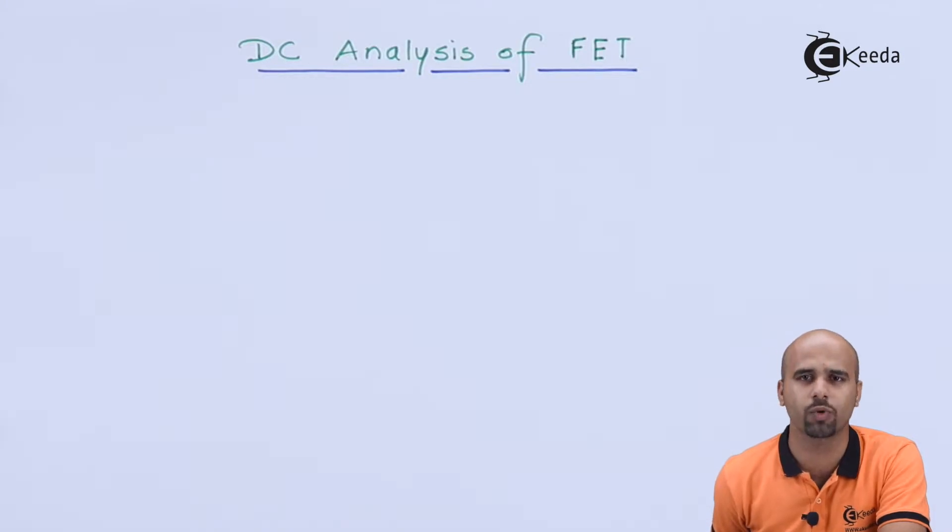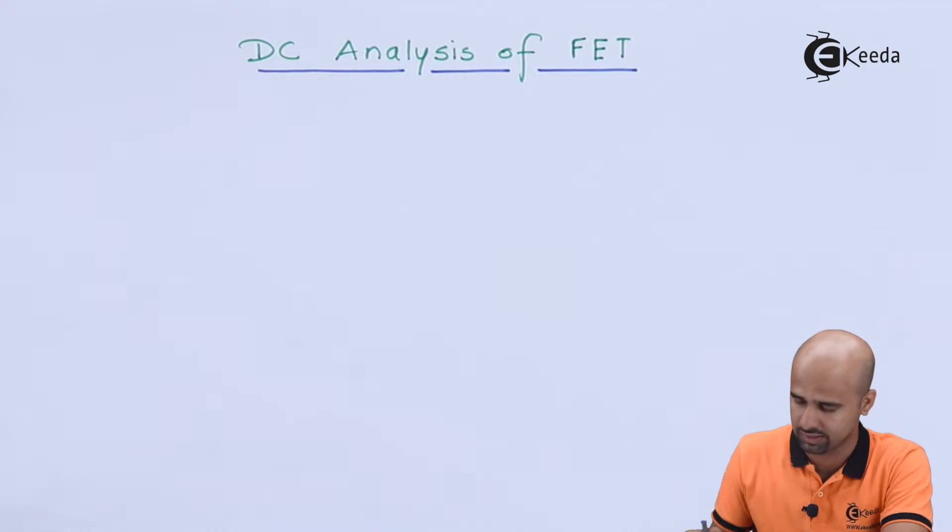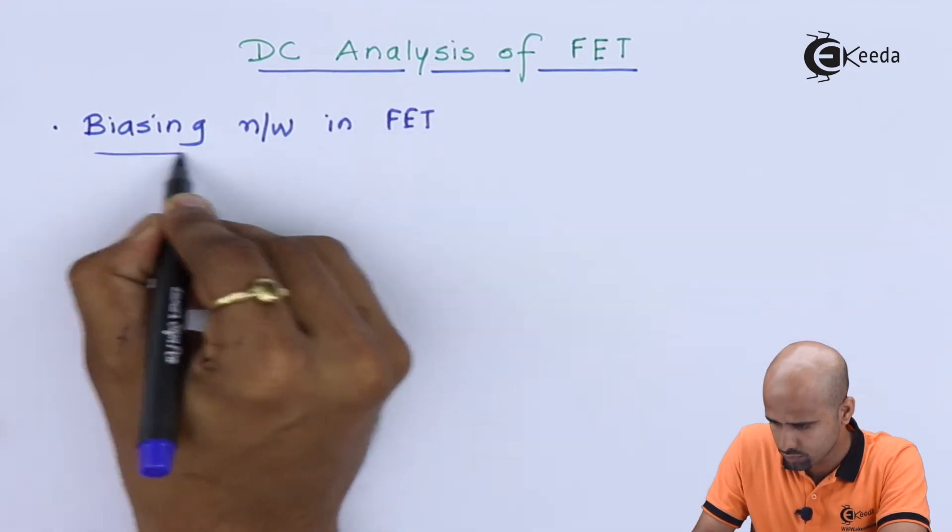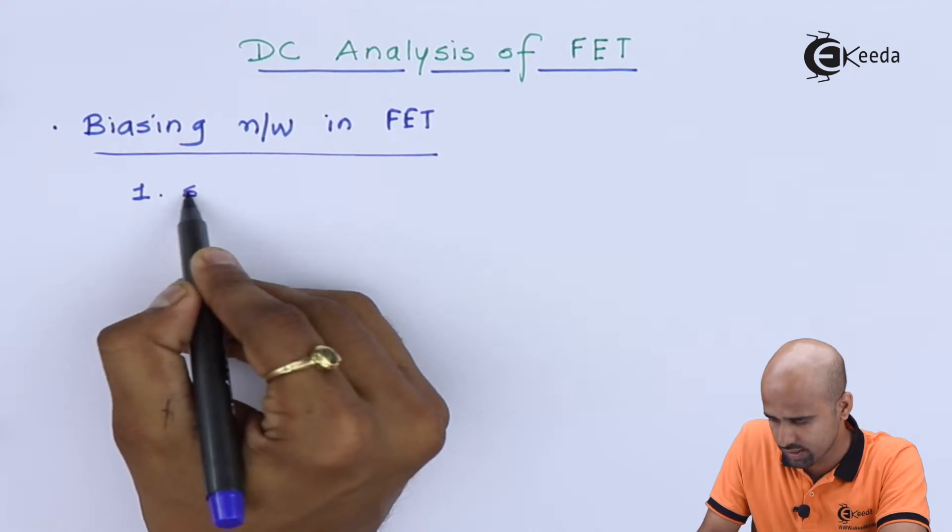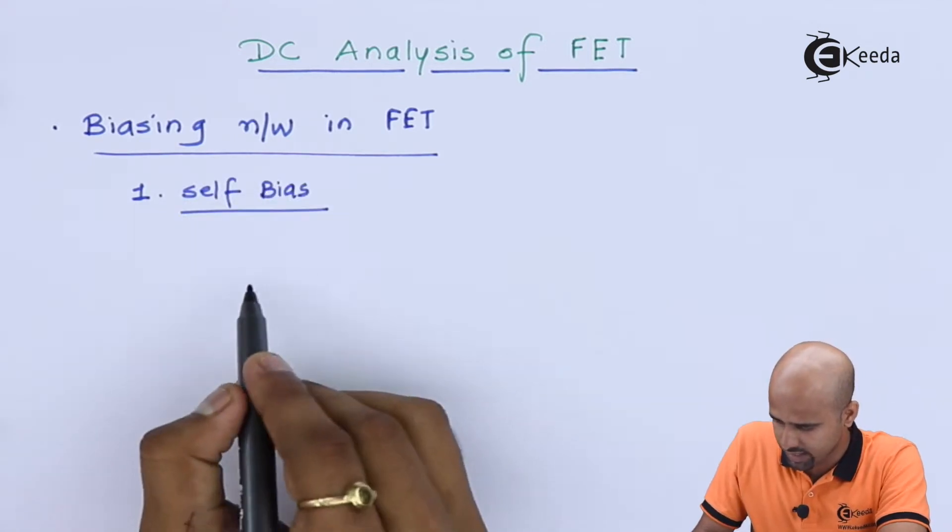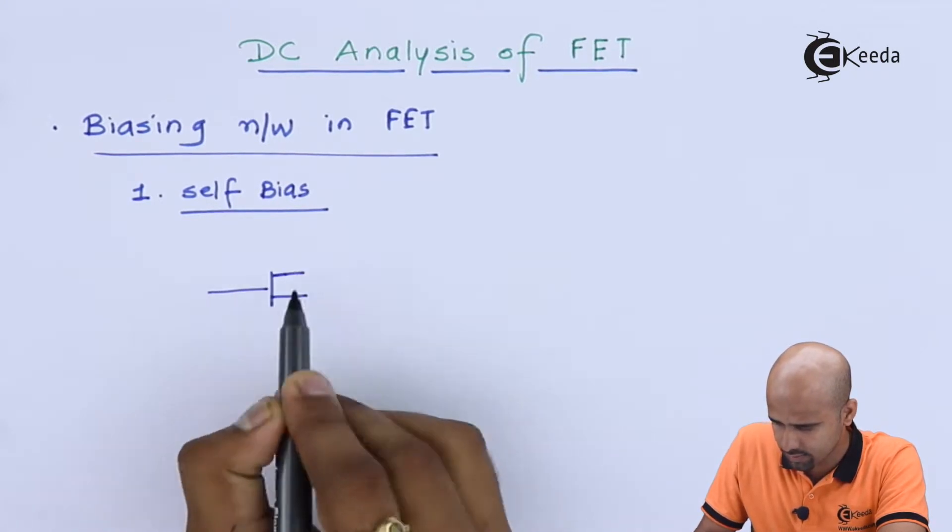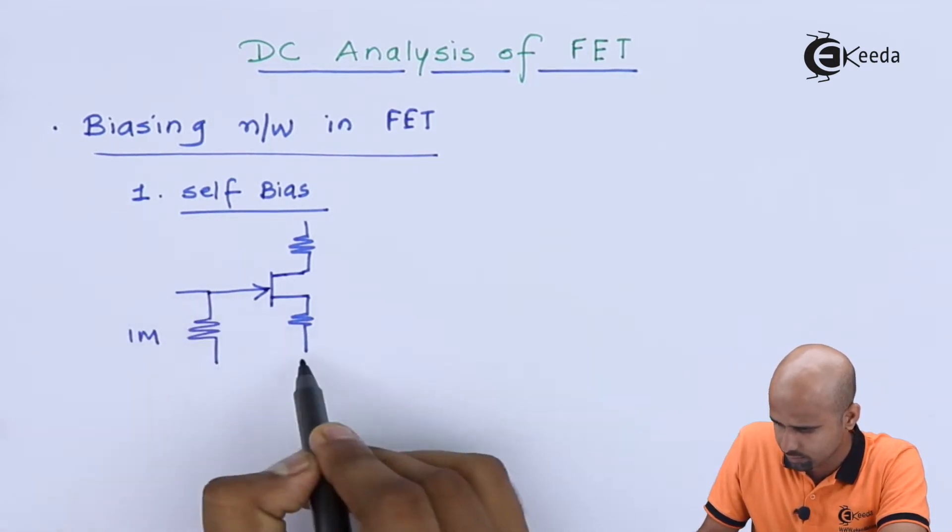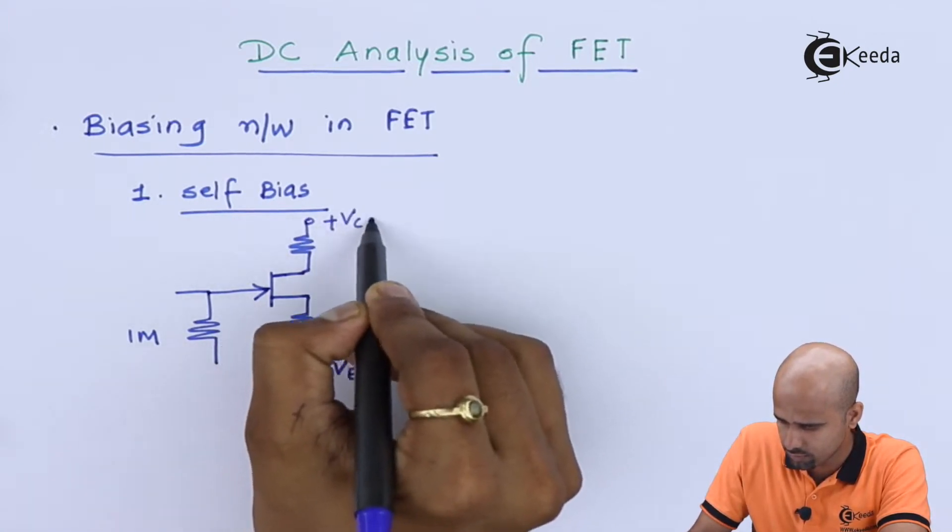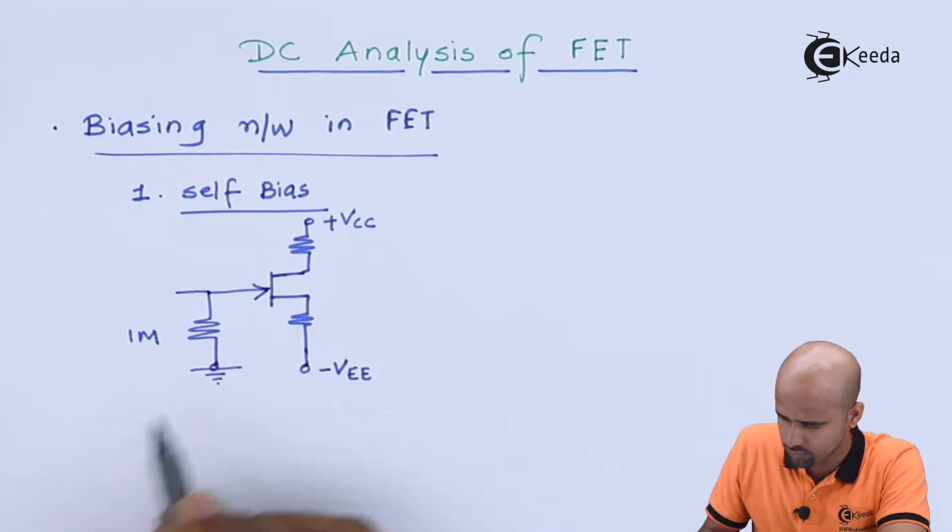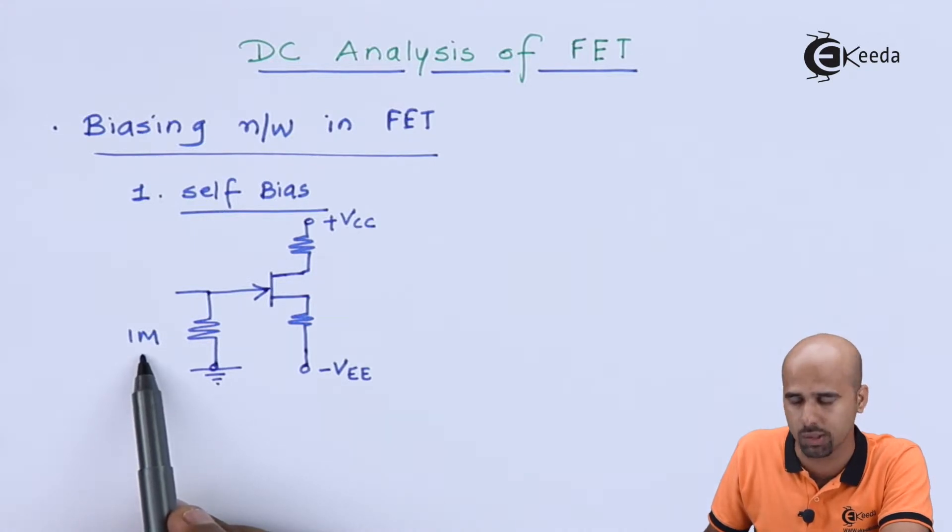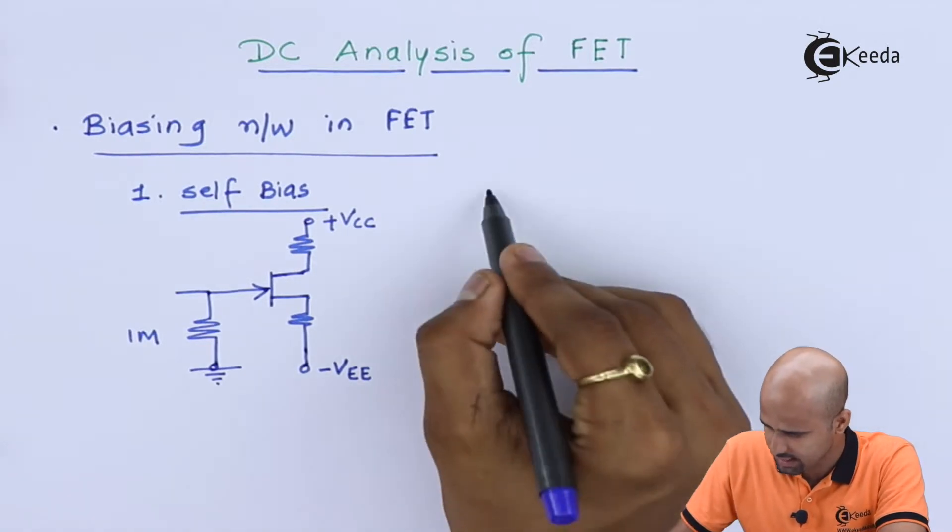Here, first of all, in the first step, we will understand how many types of biasing we can use in FET. The first biasing network that we can use is Self-Biasing. This is Self-Bias. Generally, your value of input resistance is nearly about in megaohms, that is very very high, and that's why your IG is equal to zero.